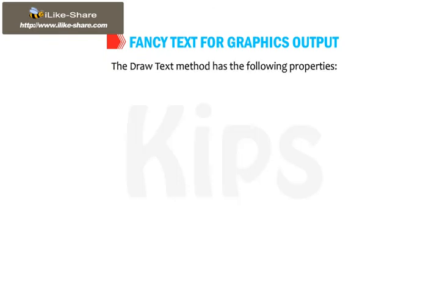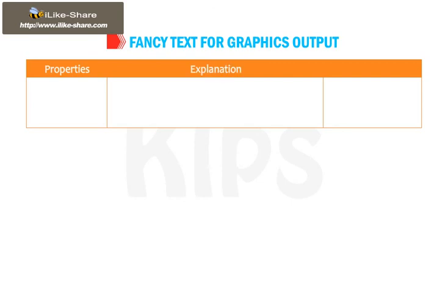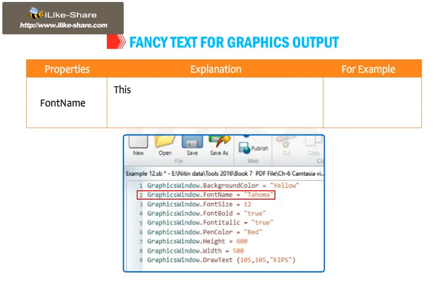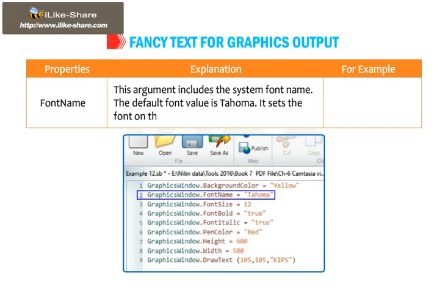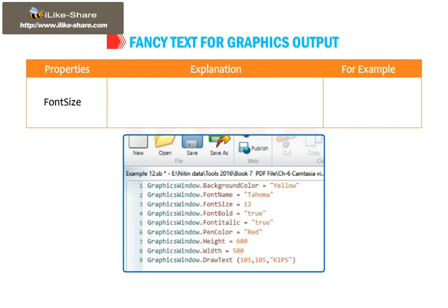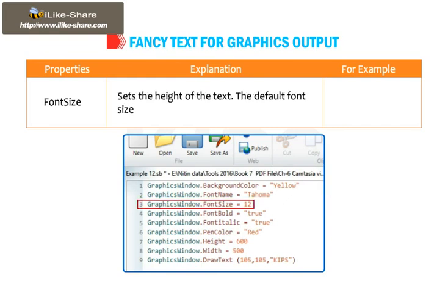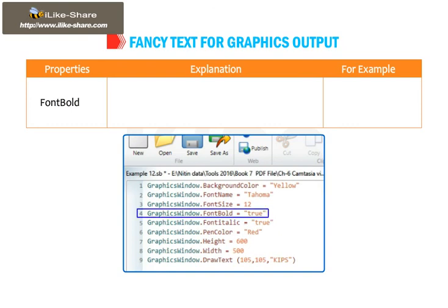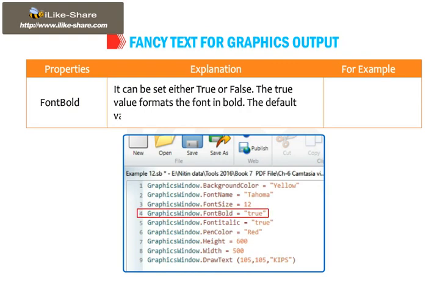The Draw Text method has the following properties. Font Name: this argument includes the system font name. The default font value is Tahoma. It sets the font on the Graphics Window. Example: GraphicsWindow.FontName = "Arial". Font Size sets the height of the text. The default font size is 12. Example: GraphicsWindow.FontSize = 10. Font Bold can be set either true or false. The true value formats the font in bold. The default value is true. Example: GraphicsWindow.FontBold = "True".